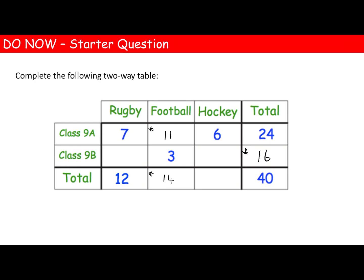How many people in class 9B played rugby? 12 in total subtract 7 gives us an answer of 5. How many people in 9B played hockey? 5 plus 3 is 8, and 16 subtract 8 is again 8. So how many people played hockey in total? 6 plus 8 makes 14.